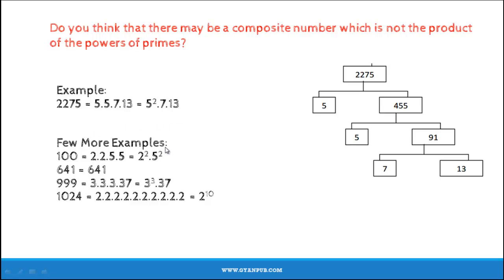So for a few more examples, we have 100, which can be written as 2 square times 5 square. 641, which is a prime number, is written itself. And 999, this is written as 3 cubed times 37. And 1024, which is written as 2 to the power 10.